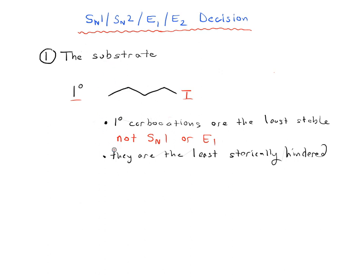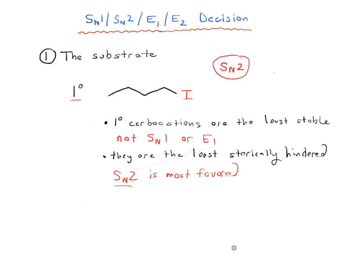Knowing that primary carbons are the least sterically hindered, the reaction that depends most on steric hindrance is the SN2. The SN2 is going to be the most favored because the big barrier for the SN2 reaction is steric hindrance — the less steric hindrance, the faster the SN2 reaction will go. So if your alkyl group is primary, you can be pretty confident this is going to be an SN2 reaction. There are exceptions, but it's almost certainly going to be SN2.